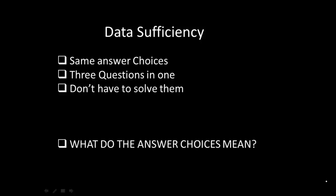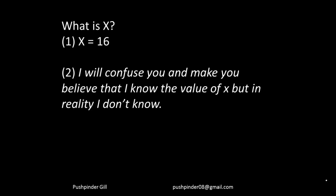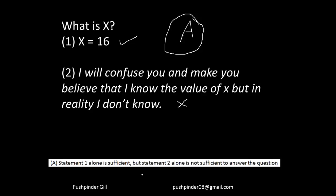Let us understand what each answer choice means before we start solving questions. Answer choice A: statement 1 alone is sufficient, but statement 2 is not sufficient to answer the question. Looking at an example — the first statement says x is equal to 16, which gives you the value of x, while the second statement gives you something like x squared plus 6x that confuses you but doesn't actually give the value. So whenever the first statement only gives you the answer and the second does not, your answer option is A.